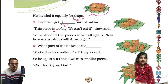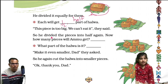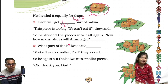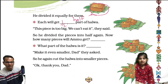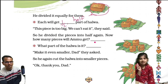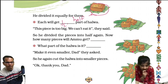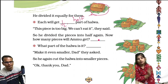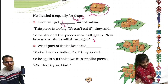Now this piece is too big and we can't eat it, so he divided the pieces into half again. Now how many pieces will Ammu get? Two pieces — half of this and half of this. So Ammu gets two pieces. And what part of the halwa is each piece? One by four. So two pieces, correct.